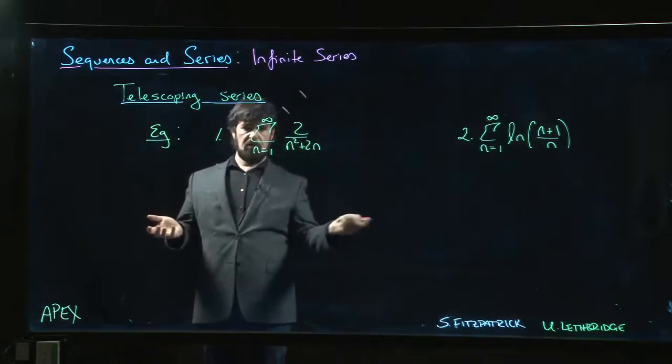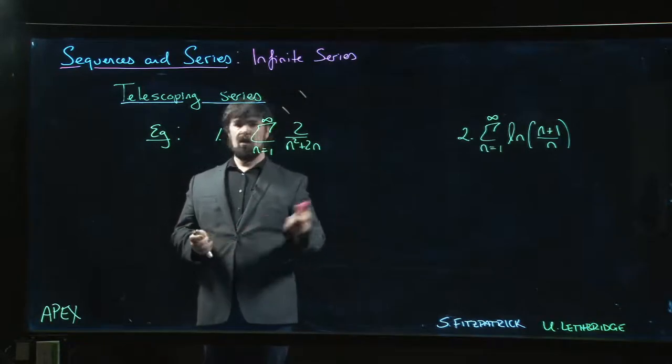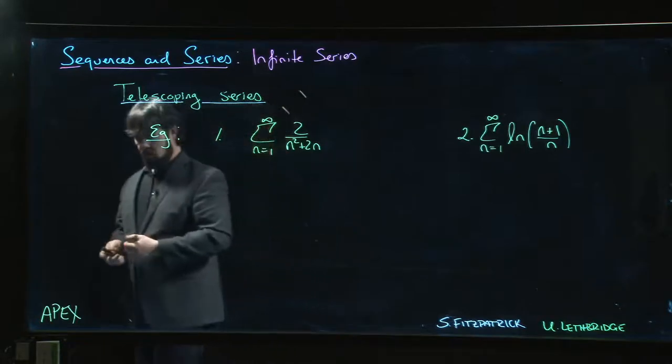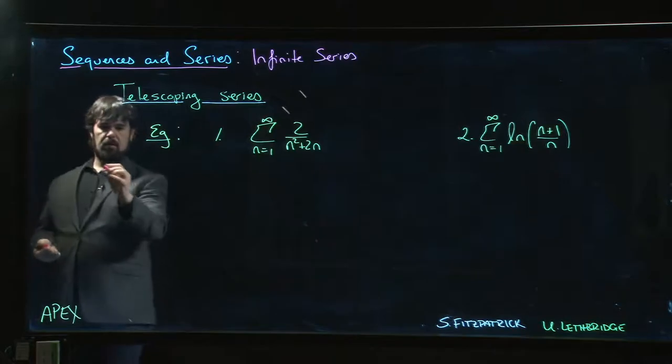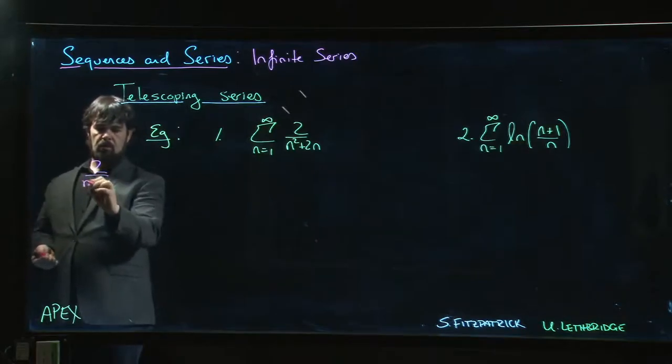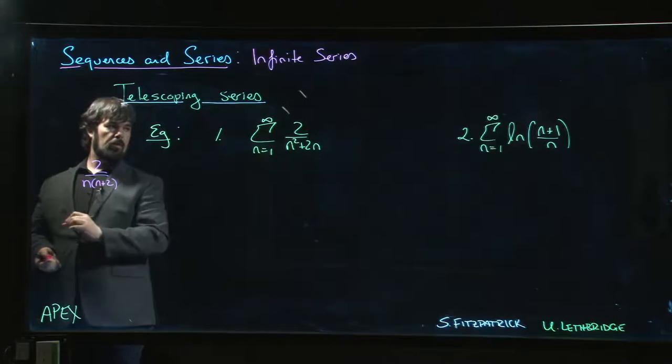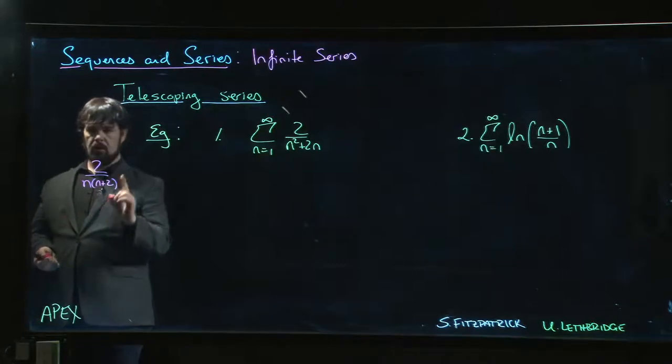But of course, you may also need to reverse that process. So, we might have to say, okay, let's work over on this side. We've got 2 over n times n plus 2, right? Rational function. We can do partial fractions.